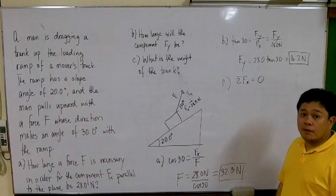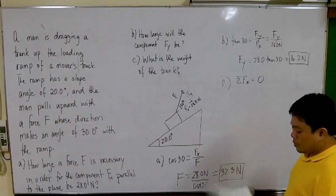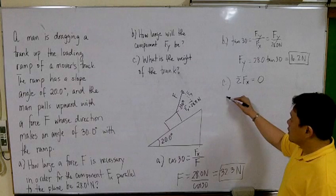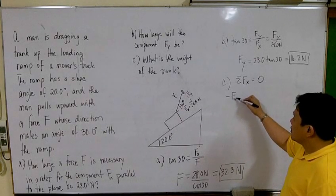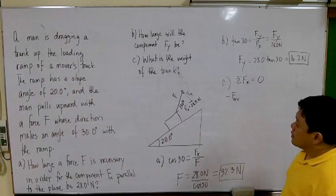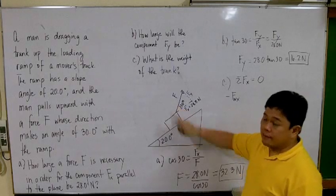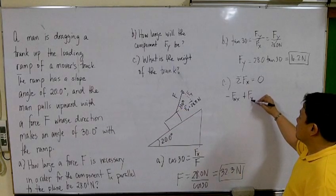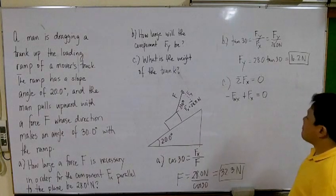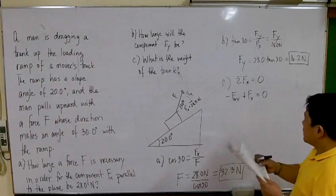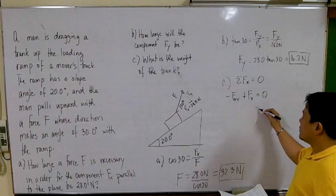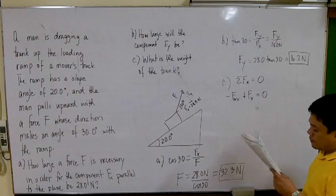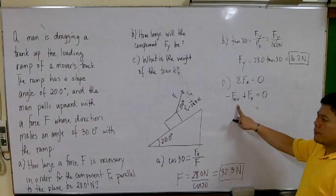Then what would be the forces along the x axis? You have the weight, let's call that negative F_wx, and the force that you supply, F_x, which is positive. Our F_x is 28.0 newtons. It's given, so we can solve for F_wx. But what is F_wx?